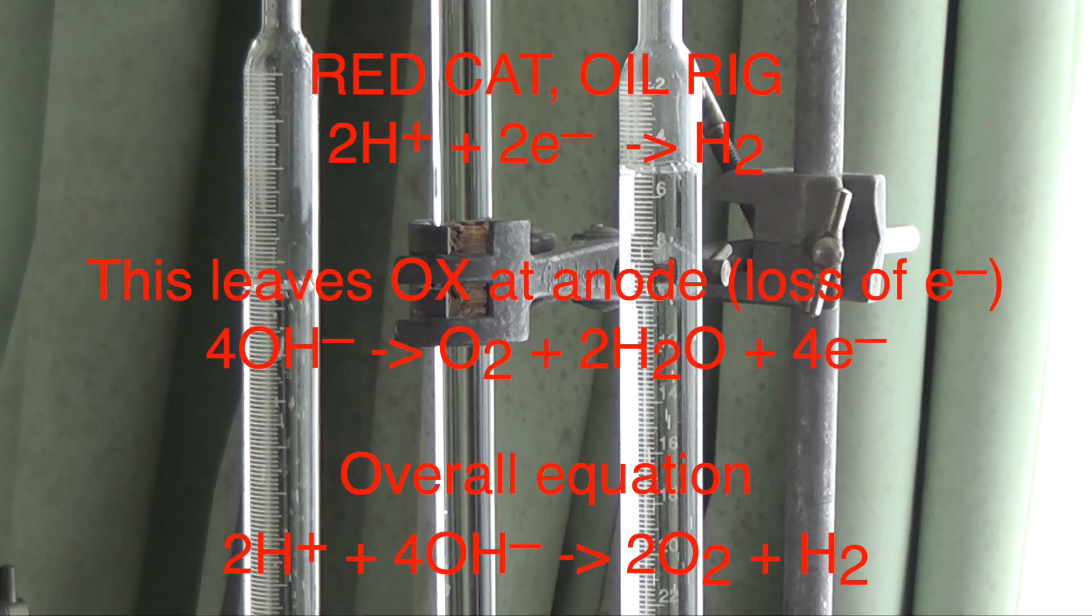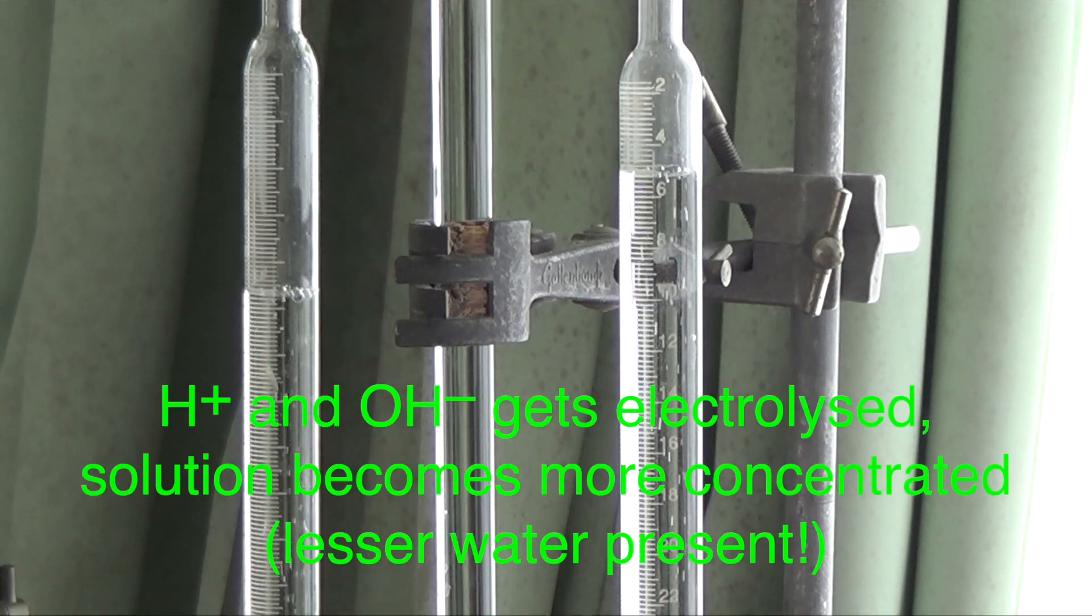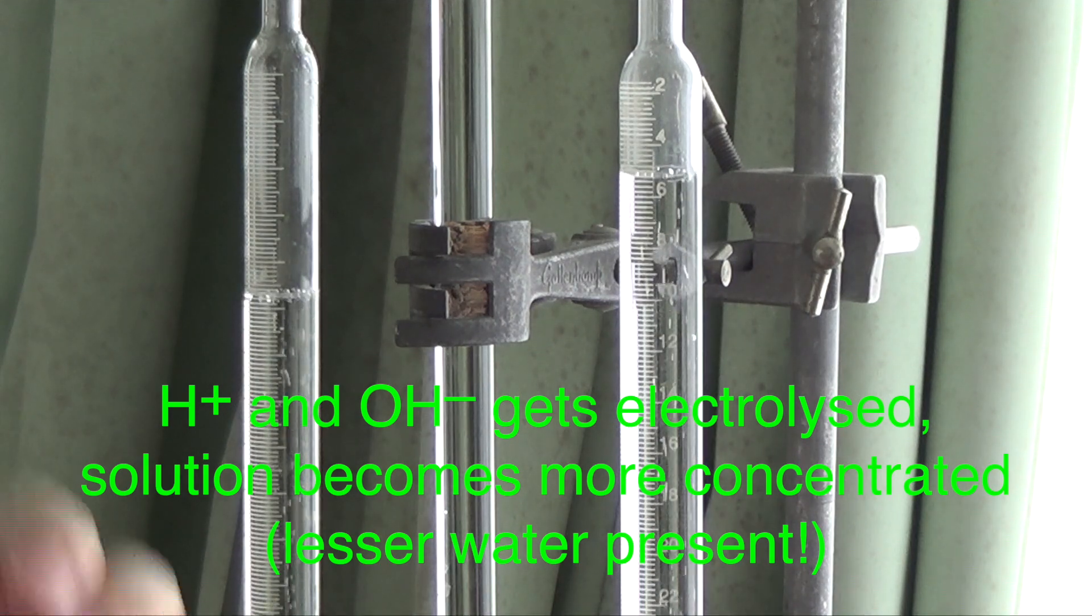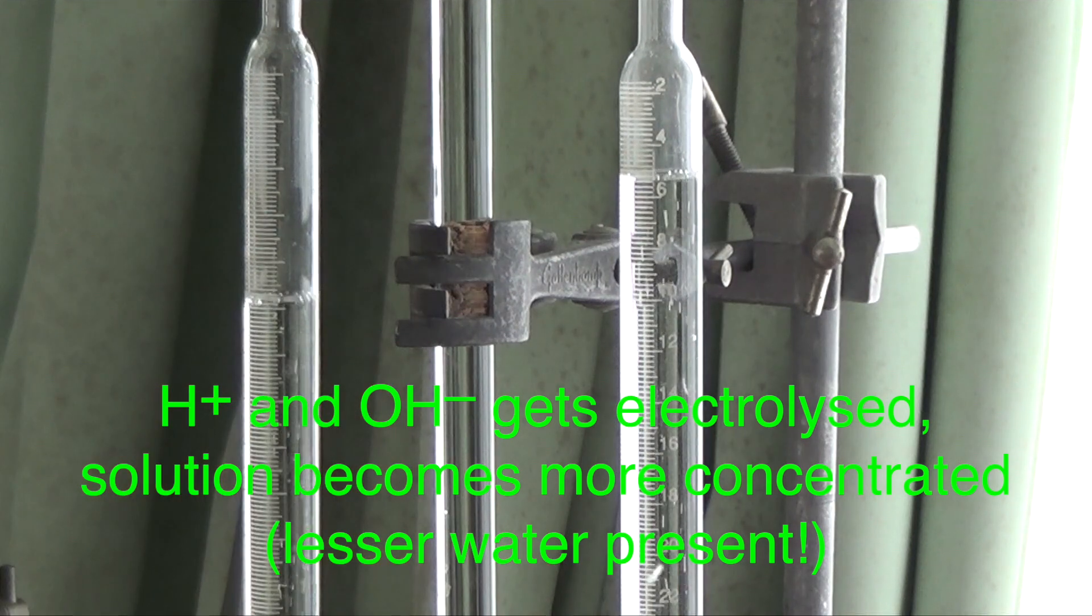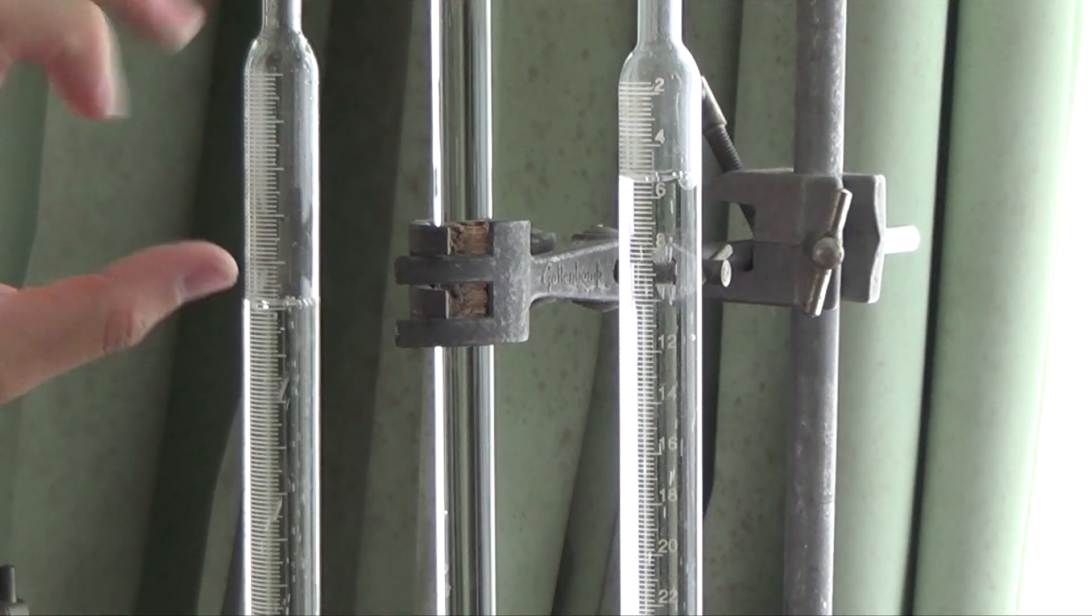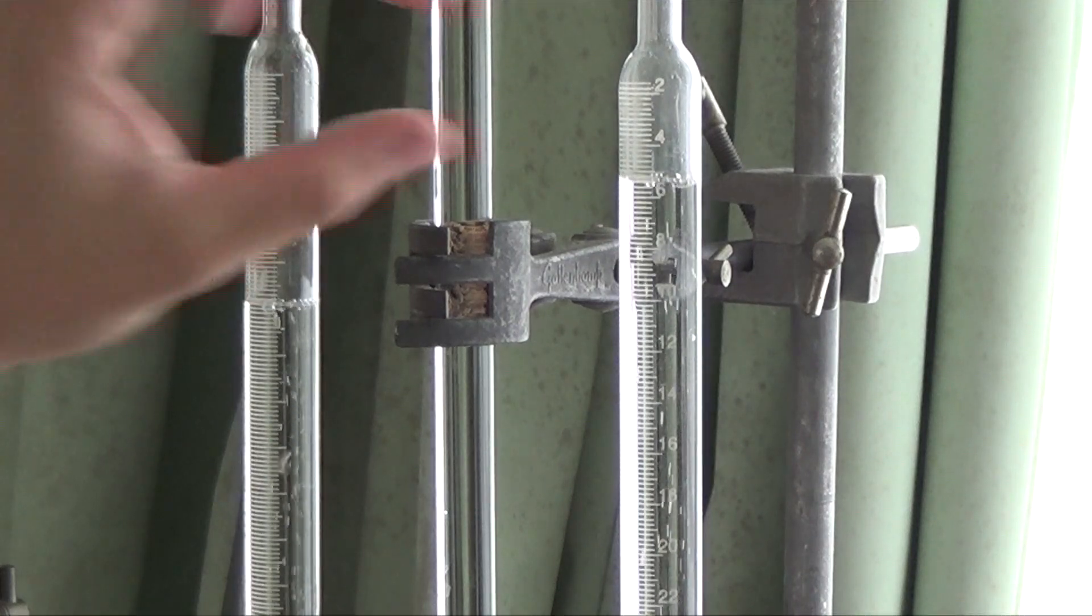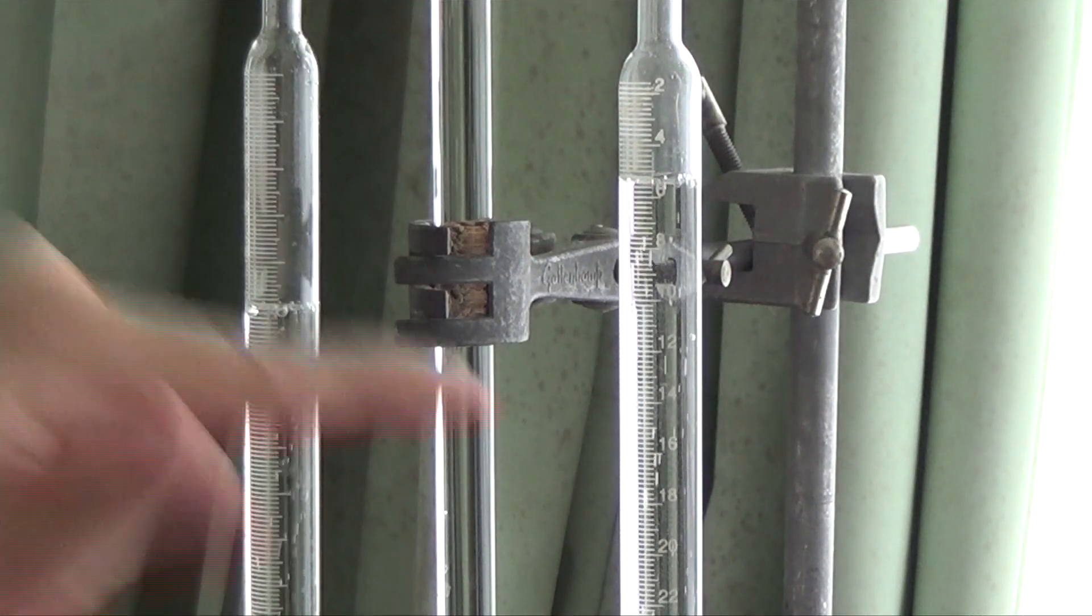This could very well be an alternative to practical questions, where you could be asked to plot the volume of gas against time, volume of gas against current applied, where you could be asked to test for these gases, where you could be asked to label which side is cathode, which side is anode. You know this is cathode because the hydrogen volume is produced in a much greater amount than the volume of oxygen produced at the anode.